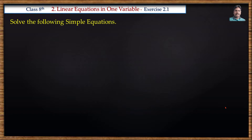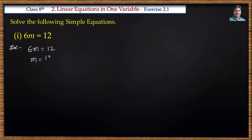First one: 6m is equal to 12. Let us solve this one. 6m = 12. We transpose 6 to the right side and divide. So m is equal to 12 by 6. 6 twos are 12, so m is equal to 2.